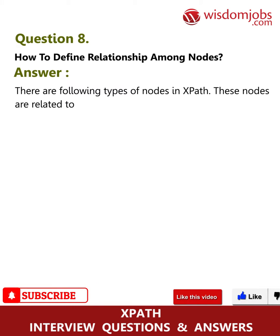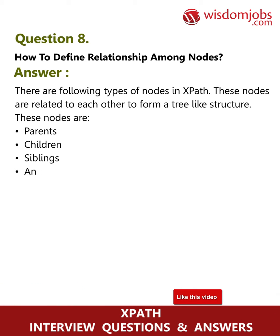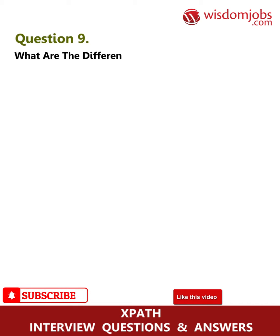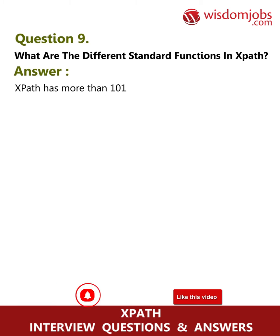Question 8: How do you define relationships among nodes? Answer: There are the following types of nodes in XPath. These nodes are related to each other to form a tree-like structure. These nodes are: parents, children, siblings, ancestors, and descendants.